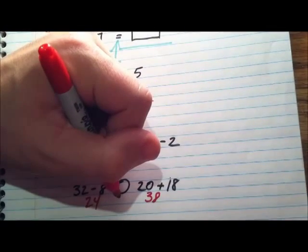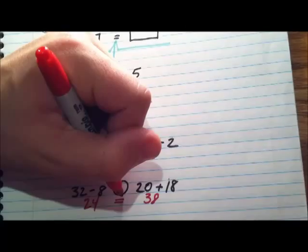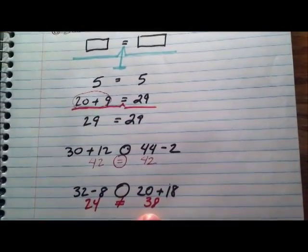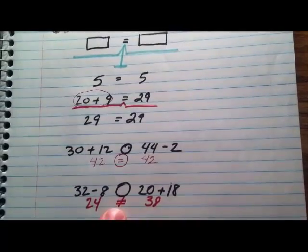So I'm not going to write an equal sign here. I'm going to write not equal. So 24 is not the same as 38. So we write the not equal sign.